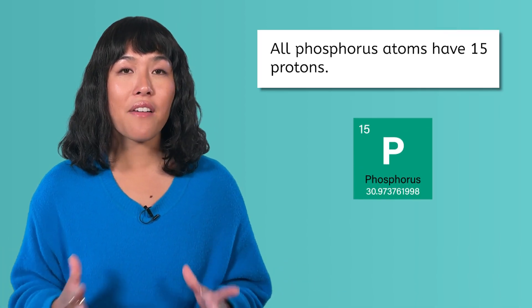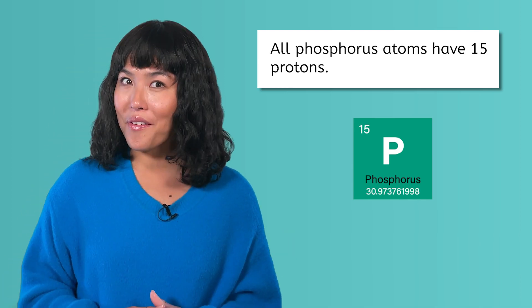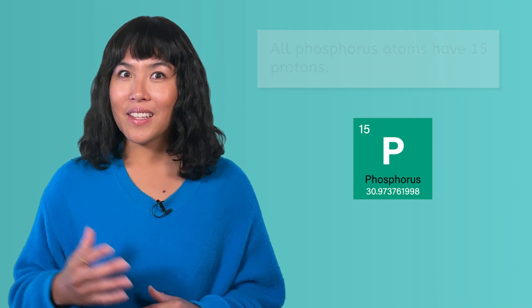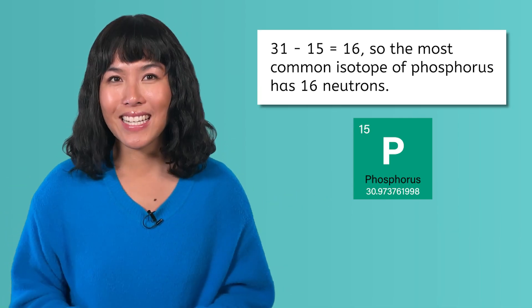If the mass number of this isotope is 31, and all atoms of phosphorus have 15 protons, how many neutrons does this isotope have? 31 minus 15 equals 16, so it has 16 neutrons.